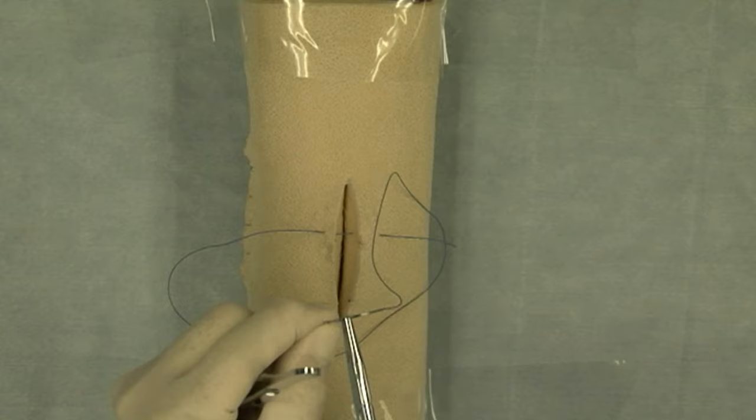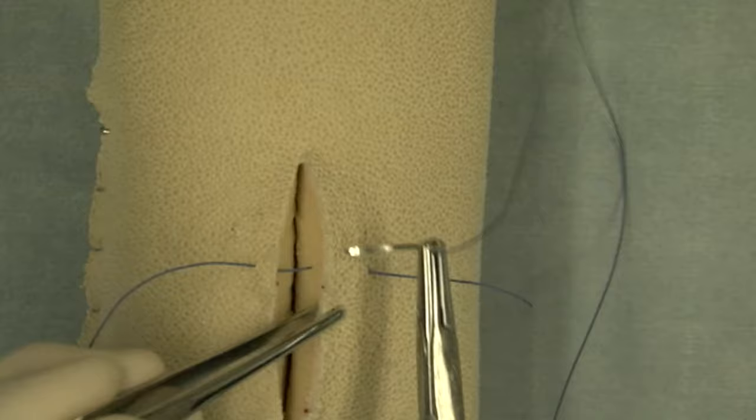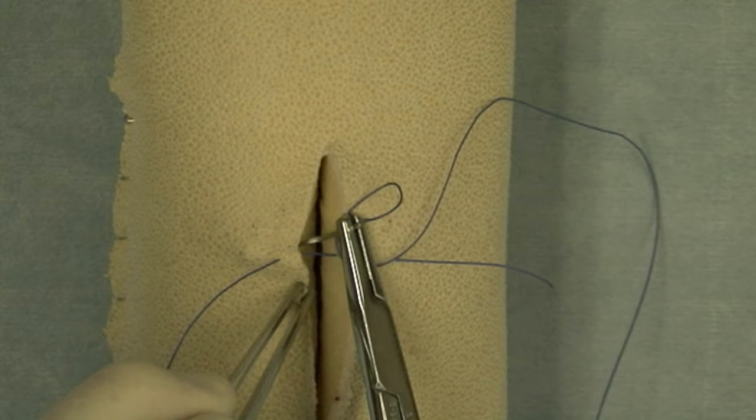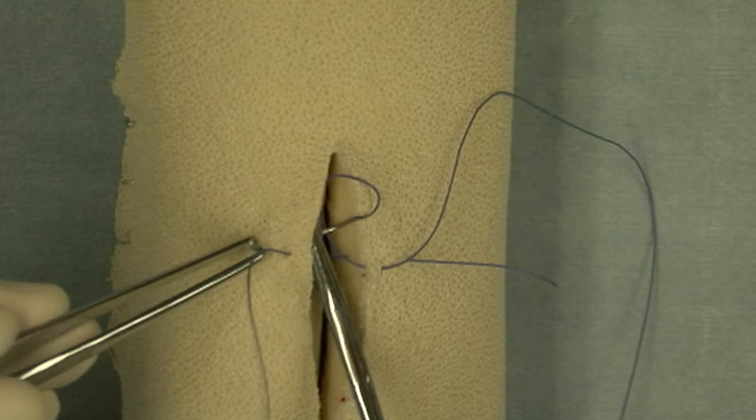The third bite is near the skin edge and the fourth bite is far from the skin edge. You can see that the suture bites are vertical in nature, meaning vertical from the perspective of the surgical incision.